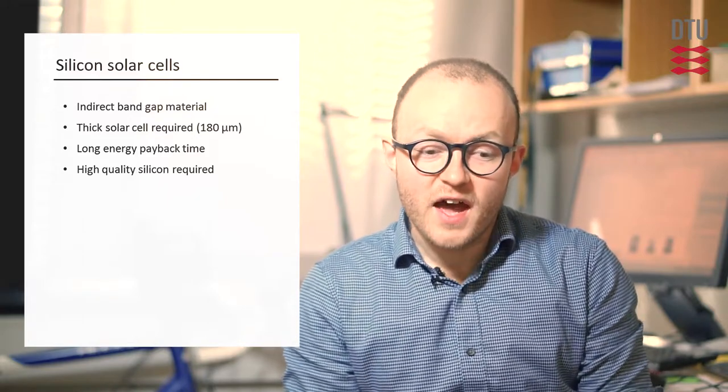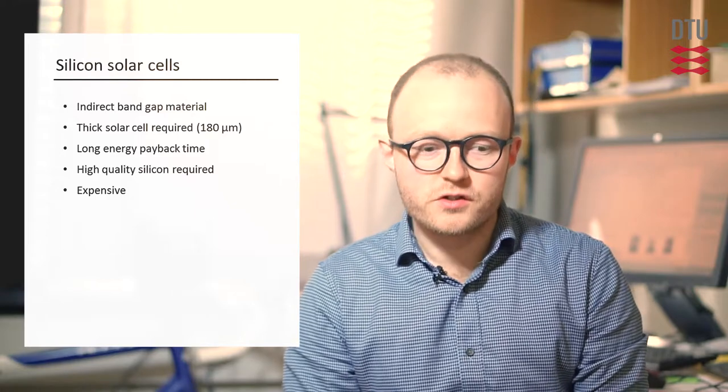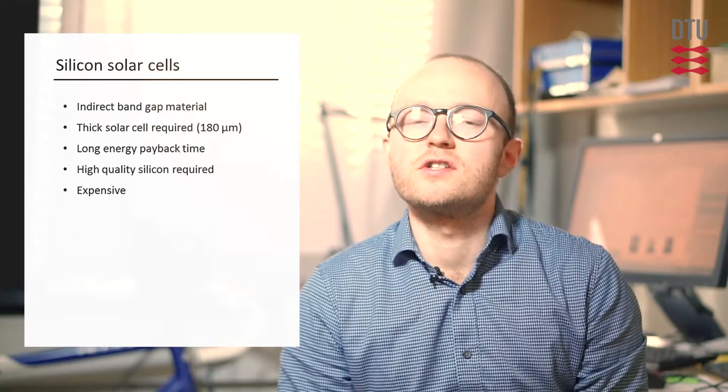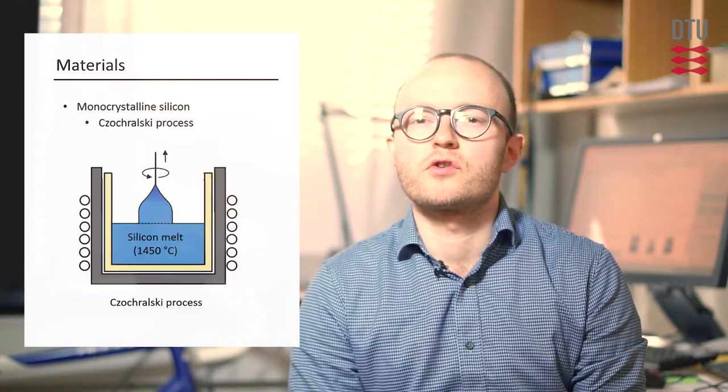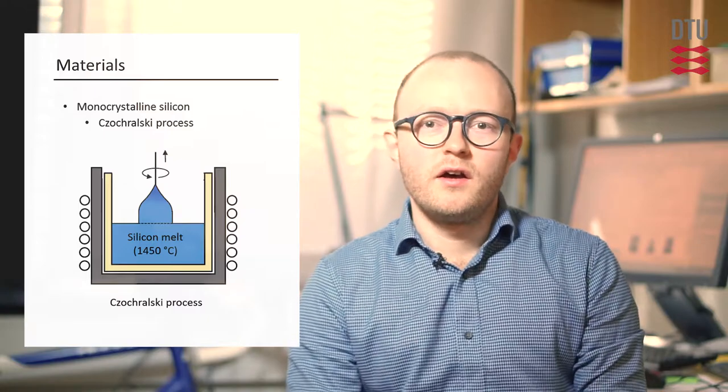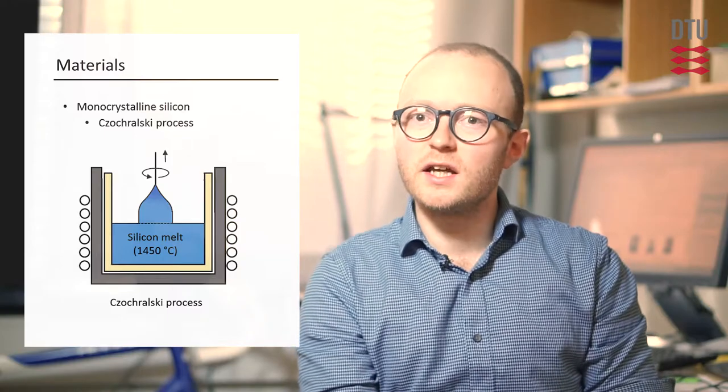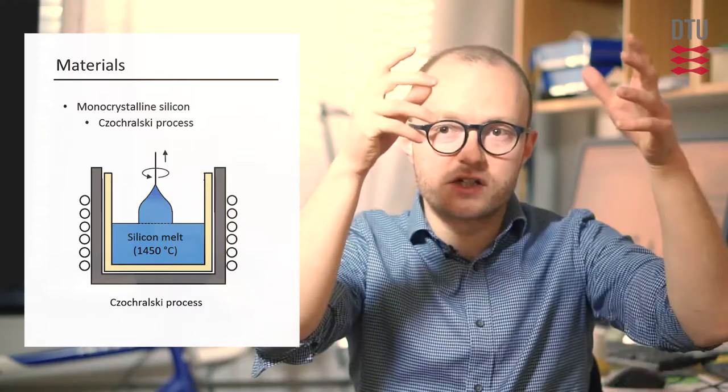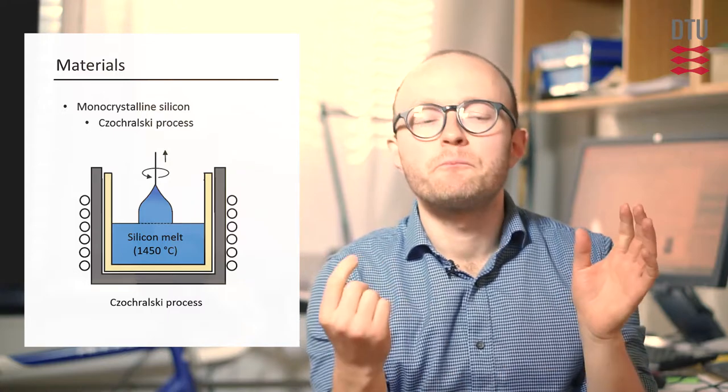The challenge of that is that that typically costs a lot of money in the production. The highest efficiency silicon cells are made from monocrystalline, single crystalline silicon, typically made from the Czochralski method, where a cylindrical ingot is grown from a monocrystalline seed. That means we only have one crystal, so all the crystal planes are aligned within this material. We don't have any grain boundaries, and that means we minimize the recombination in the bulk.